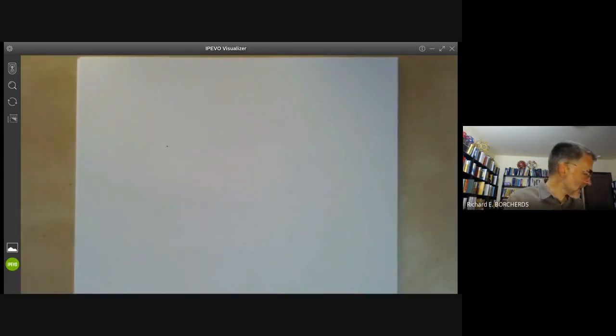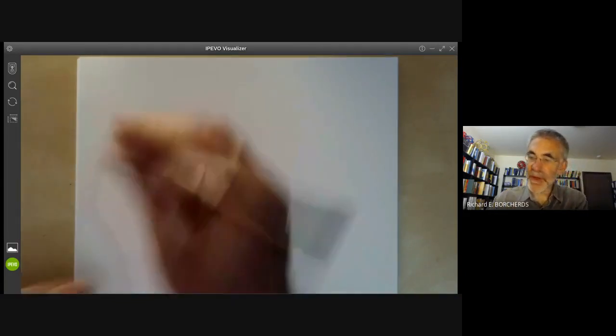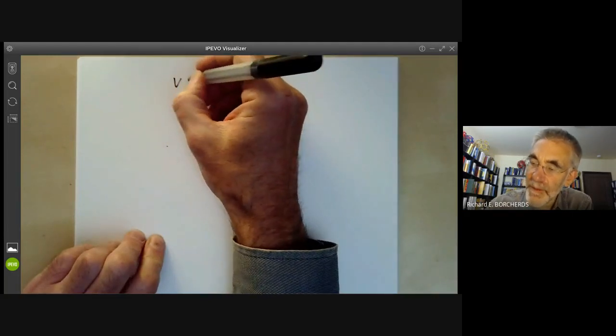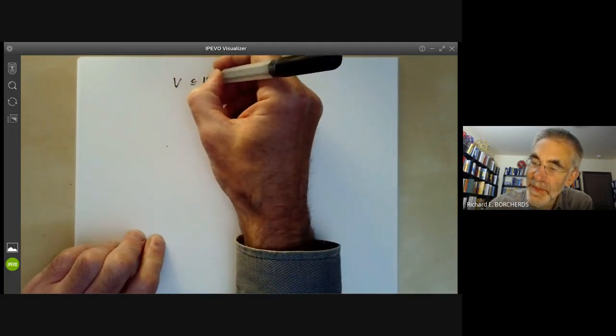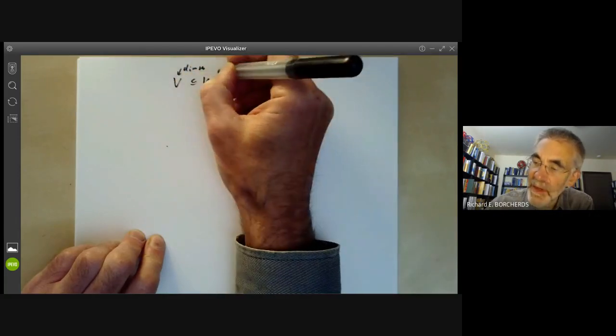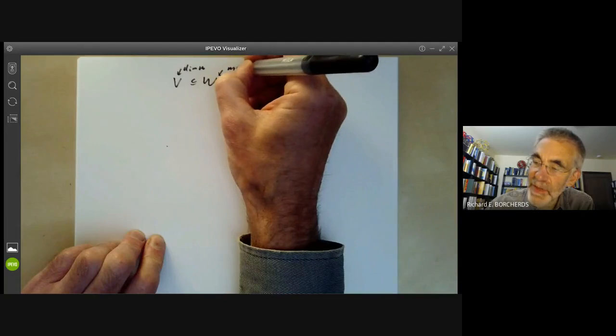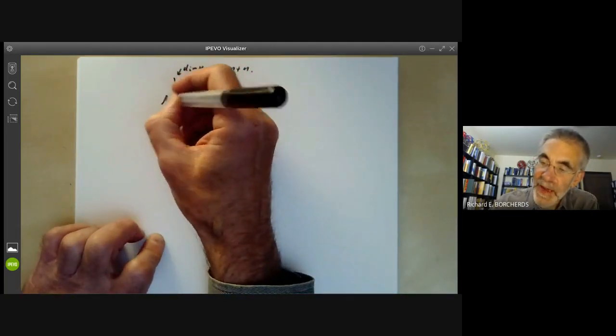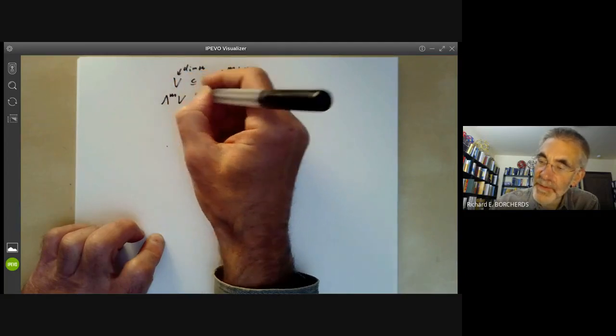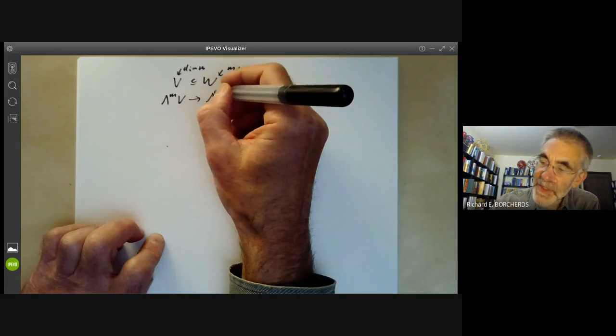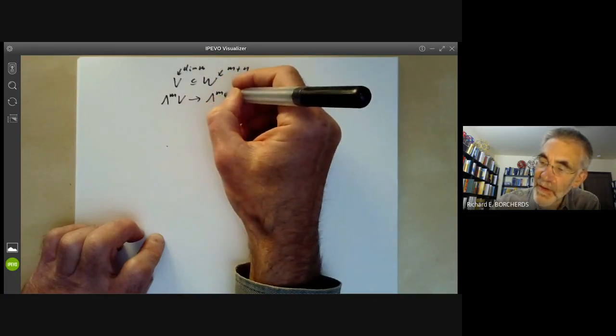There's a more abstract way of doing this. Suppose we've got a vector space V contained in a vector space W, where V has dimension M, and W has dimension M+N. What we can do is we can take the mth exterior power of V, and this then maps to the mth exterior power of W.